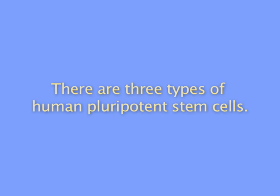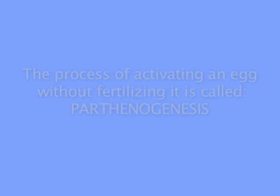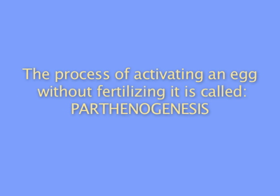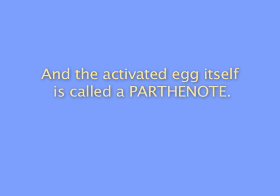There are three types of human pluripotent stem cells. One type derives from an egg that is activated without sperm. The process of activating an egg without fertilizing it is called parthenogenesis, and the activated egg itself is called a parthenote.